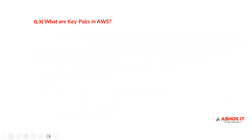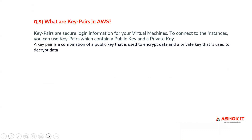What are key pairs in AWS? Key pairs are secure login information for your virtual machines to connect to the instances. You can use a key pair which contains a public key and a private key. A key pair is the combination of a public key, used to encrypt the data, and a private key, used to decrypt the data.